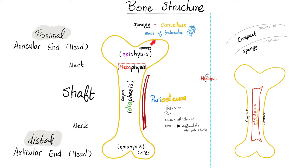Compact bone is in the outer shell and is very strong in the shaft. Spongy bone is usually less strong — that's why it's here at the articular surfaces. Periosteum is on the outside: it protects your bone, it can feel pain, and it provides attachment surfaces for muscles and ligaments.